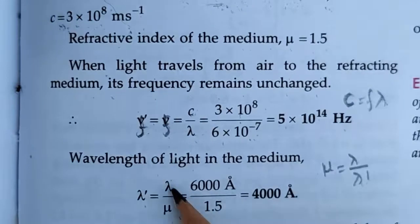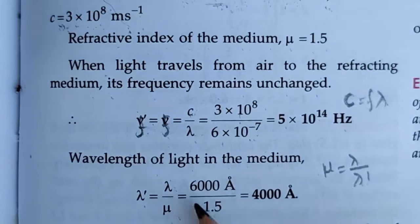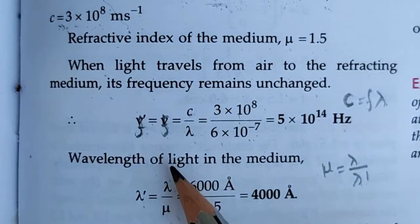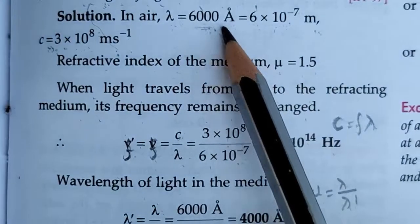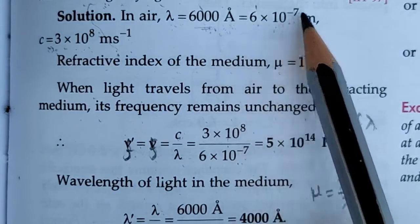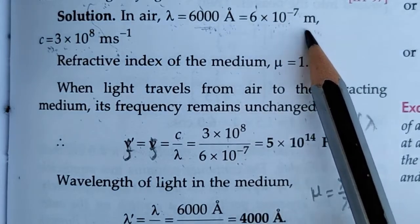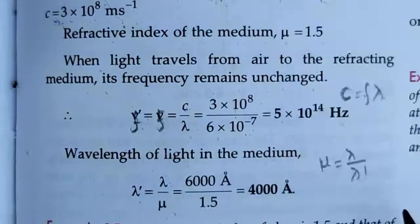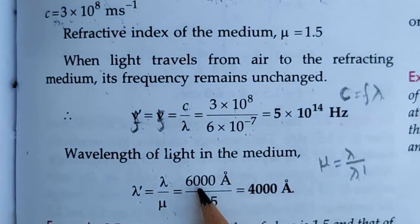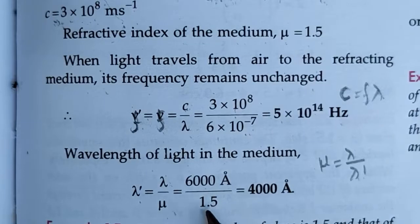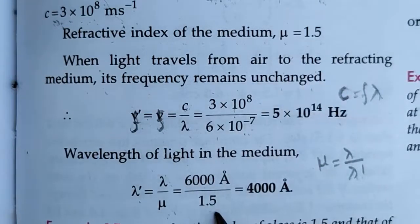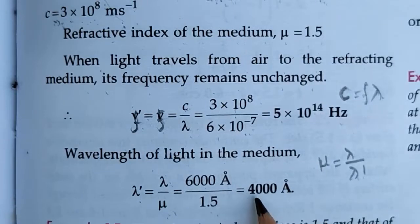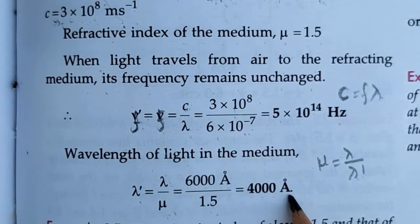Putting the values: lambda equals 6000 angstrom divided by mu equals 1.5. We get the answer 4000 angstrom.